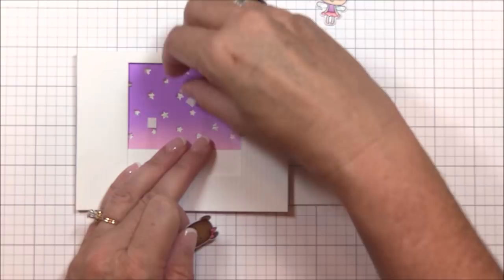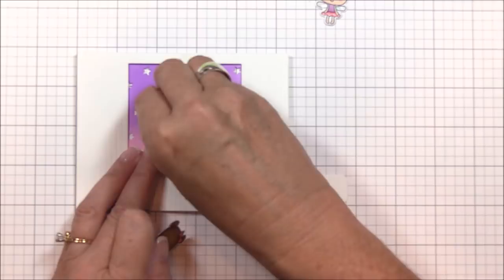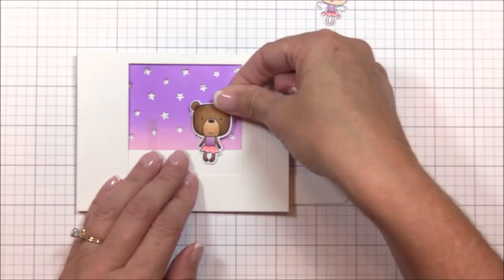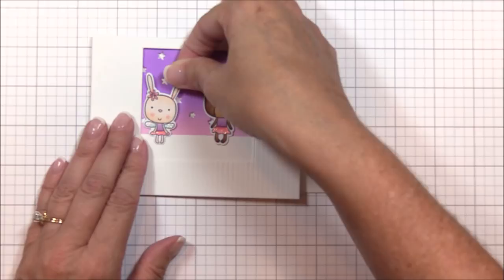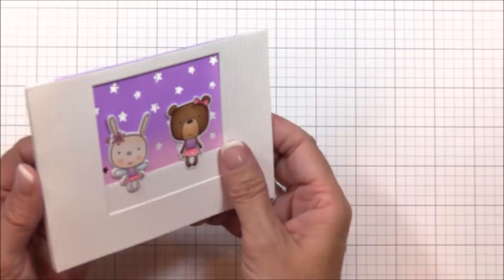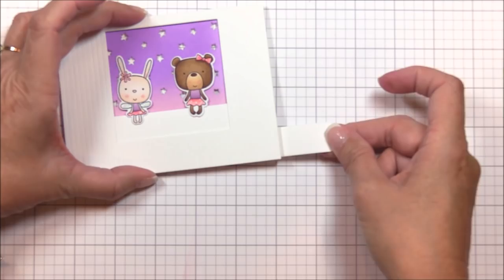Now I can adhere those cute little dancers from the Tutu Trio stamp set that I stamped, colored, and die cut off camera. I've removed the liner paper from the acetate tabs and I'm placing the bear onto the right tab and the bunny to the left tab. Notice that the critters completely hide the acetate tabs, which adds to the magic of this technique. And when I push on the pull tab, the critters glide in opposite directions behind stage. Isn't that a hoot?